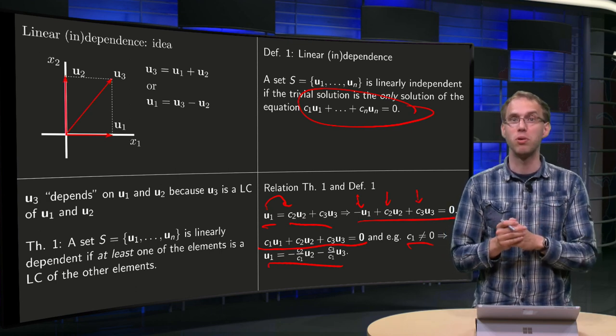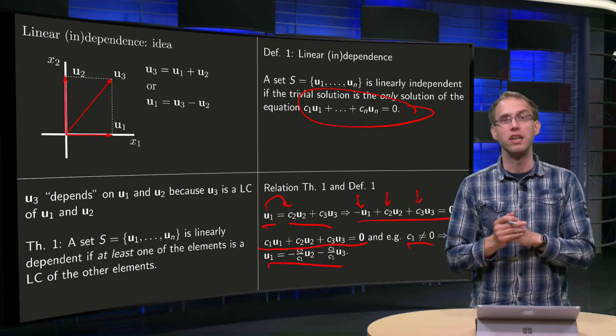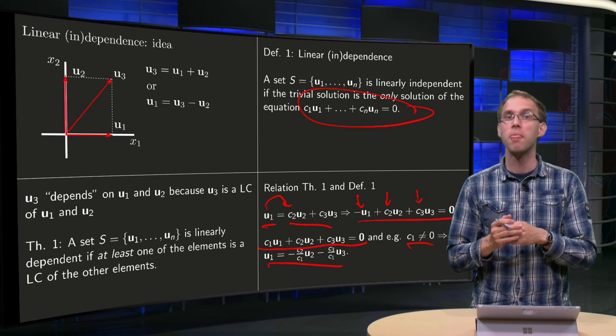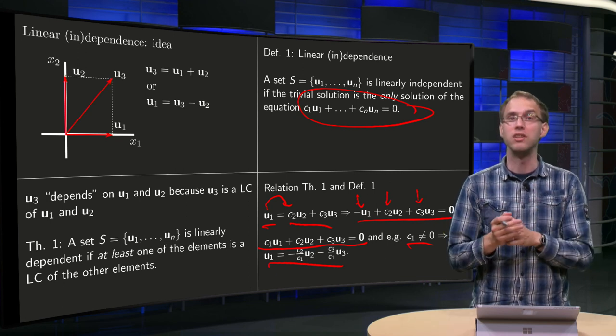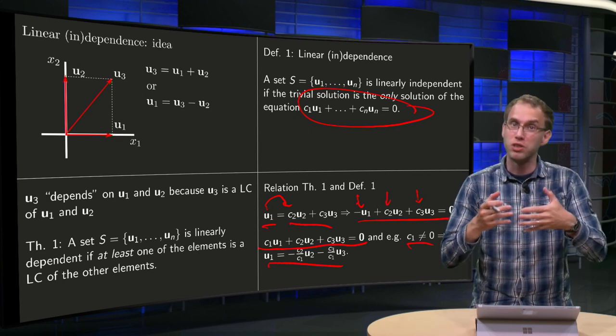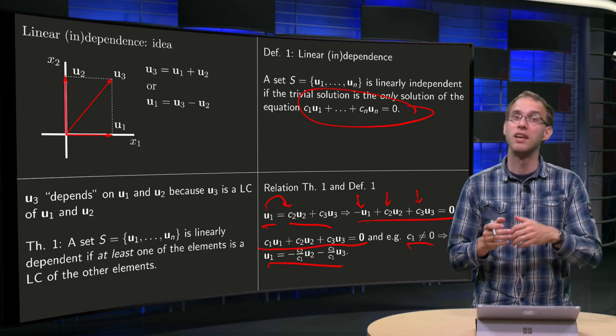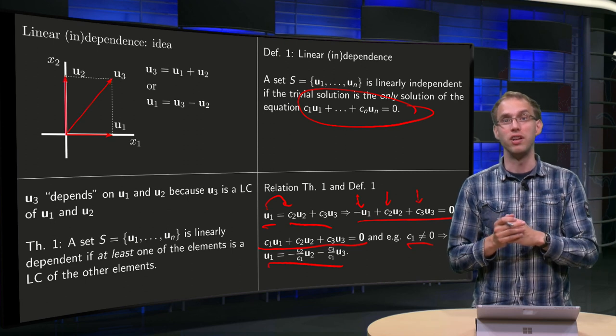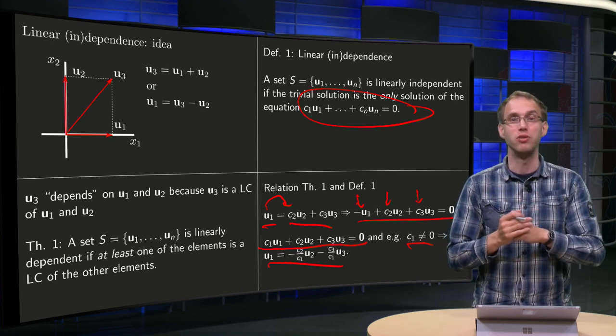So now you see what independence is, you have the rather abstract definition, which is convenient if you want to check this for a given set and also we have the idea which is given by the theorem which tells you what it actually means.